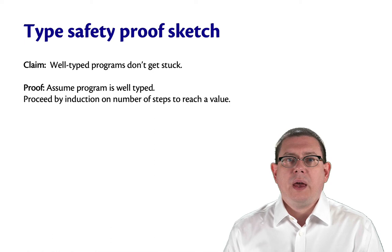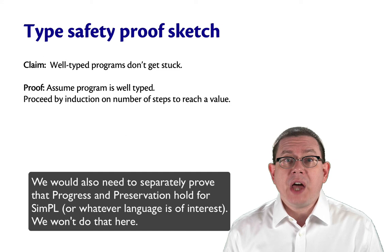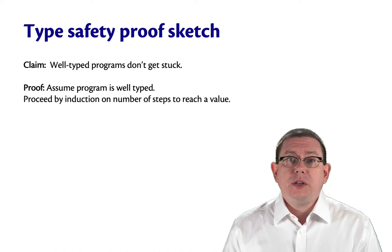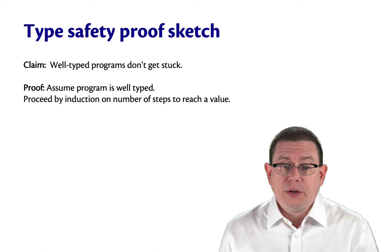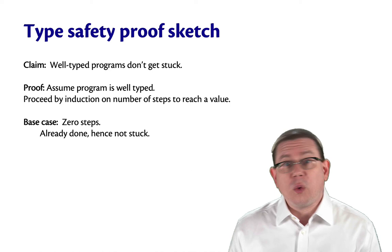To prove type safety, we can use progress and preservation together. So here's a sketch of how such a proof would work. Our claim would be that well typed programs don't get stuck. That's what type safety means. So we begin by assuming that the program is well typed. And we proceed by induction on the number of steps it will take to reach a value. The base case is zero. There are zero steps remaining till we reach a value. So we've already got a value.